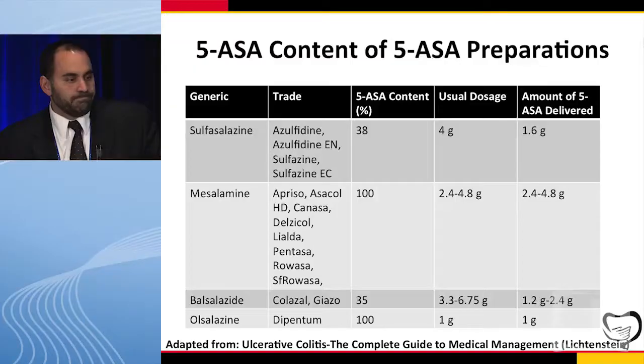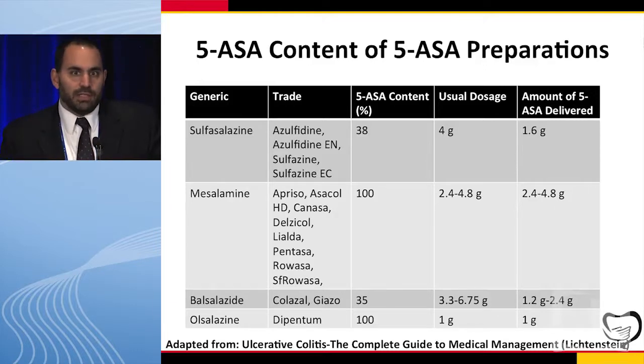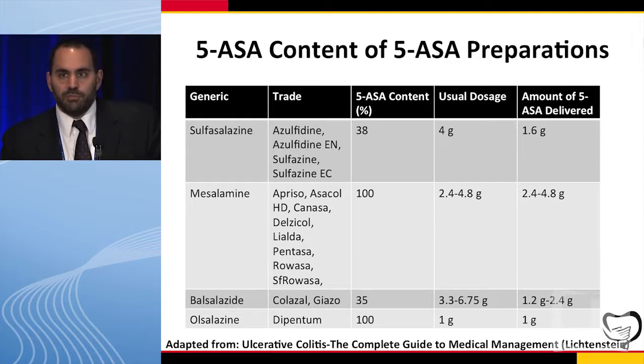It's important to note how to compare doses among the products. With mesalamine, 100% of the dosage is 5-ASA — so if you're giving 2.4 grams of Lialda, you're giving 2.4 grams of 5-ASA. Compare that to sulfasalazine: at a typical dose of 4 grams, you're only giving about 1.6 grams of 5-ASA because only 38% of that product is 5-ASA. Balsalazide is 35% 5-ASA, so if you're giving 6.75 grams you're giving about 2.4 grams of 5-ASA. When your insurance companies tell you to change products, you need to think about these conversions.